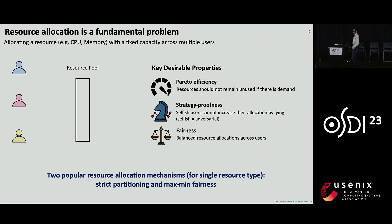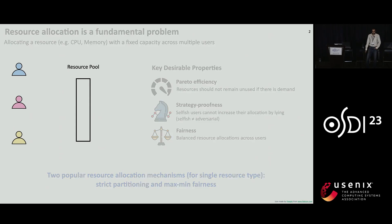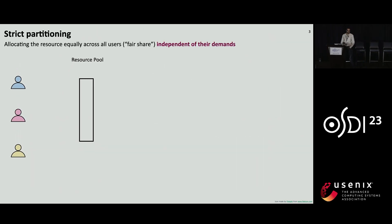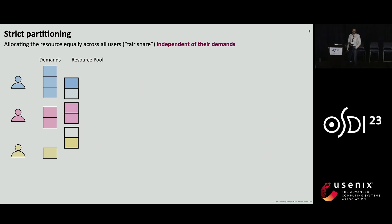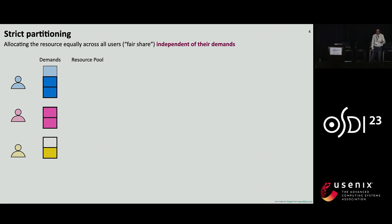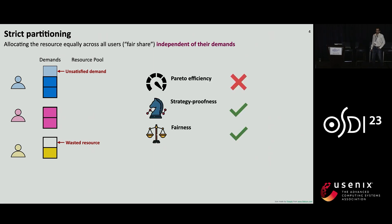The two most popular algorithms for allocating a single resource are strict partitioning and maximum fairness. Strict partitioning divides resources equally to users independent of their demands. In this example, we have three users sharing a resource with a capacity of six slices. Say their demands are three, two, and one respectively. Strict partitioning will allocate each user exactly their fair share of two slices. The obvious problem is resource under-utilization — the yellow user is not using one of its slices, which could have been allocated to the blue user. Therefore, while strict partitioning satisfies strategy-proofness and fairness, it violates Pareto efficiency.